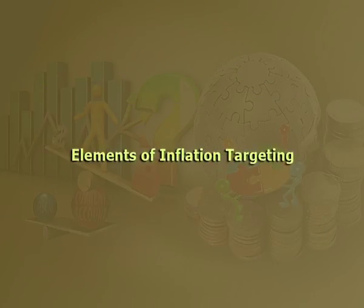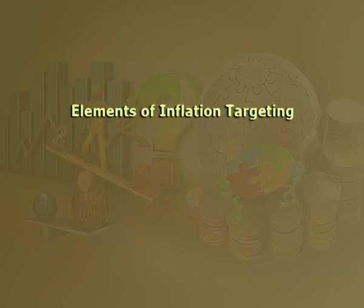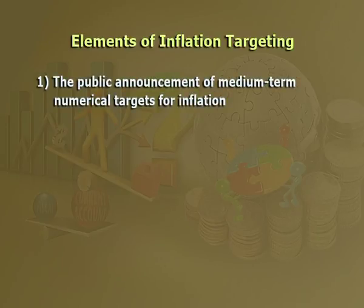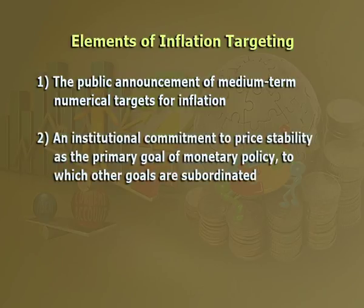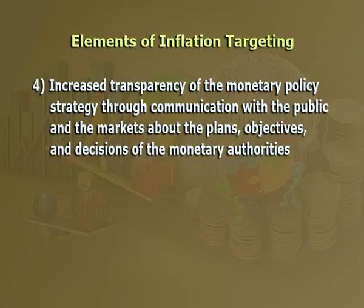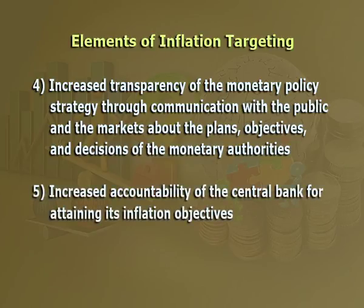Now let us look at the elements of inflation targeting. Inflation targeting is a recent monetary policy strategy that encompasses five main elements. Number one: public announcement of medium-term numerical targets for inflation. Number two: an institutional commitment to price stability as the primary goal of monetary policy, to which other goals are subordinated. Number three: an information-inclusive strategy in which many variables, not just monetary aggregates or the exchange rate, are used for deciding policy instruments. Number four: increased transparency of monetary policy strategy through communication with the public and markets about plans, objectives, and decisions of monetary authorities. Number five: increased accountability of the central bank for attaining its inflation objectives.